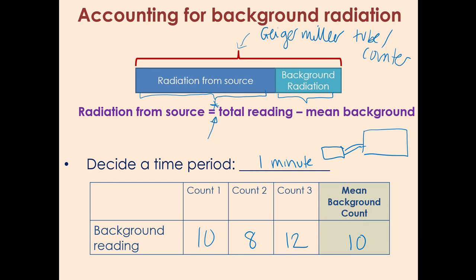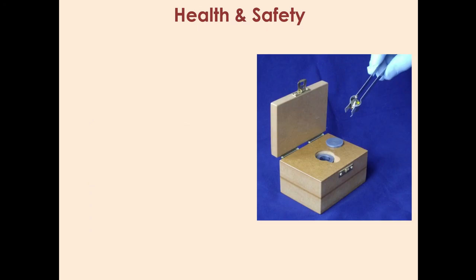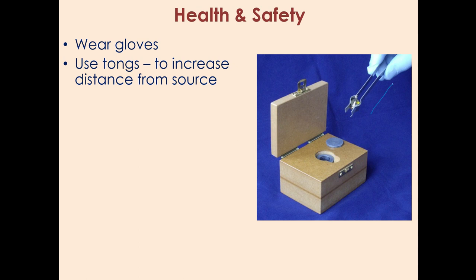The next thing we're going to look at is health and safety, and really this picture unpicks most of the health and safety that we need. We know that the danger here is going to be exposing humans to ionizing radiation and risking mutating their cells. If you look at the picture here, what's going on? First thing is the person doing the experiment is wearing gloves, so they've put some small shielding between themselves and the radioactive source. The second thing is they are using tongs to increase the distance between the source and their hand.